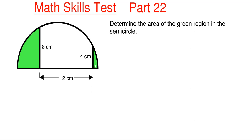So in order to get the green region of the semicircle we have to know a couple things. We have to know the overall radius or diameter of the semicircle so we can get its overall area and then we have to subtract out the total area in white.